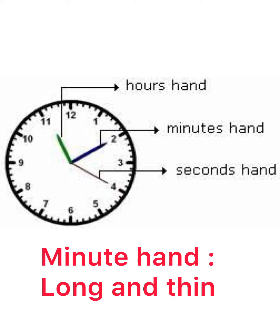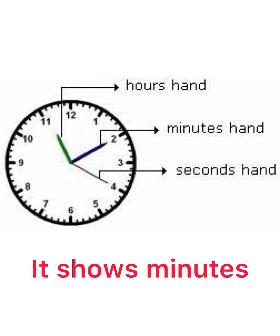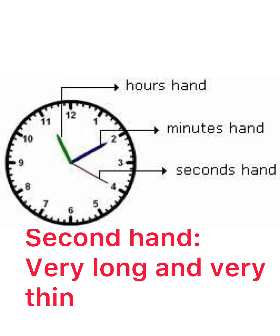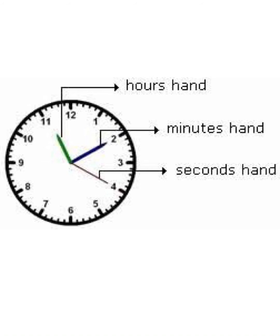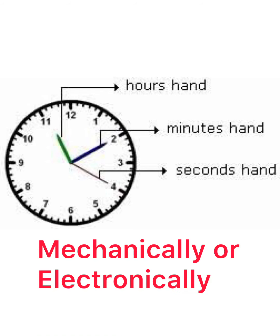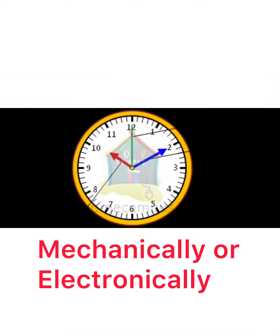The minutes hand is long and thin. It shows the minutes. Between the hours, there will be small lines, and each small line represents the minutes. Next, the seconds hand. The seconds hand is very long and thin. It shows the seconds. It makes 1 rotation in 1 minute, 5 rotations every 5 minutes, and 60 rotations in every 1 hour. The analog clock works either mechanically — using the power of a battery — or electronically, meaning using electric current.